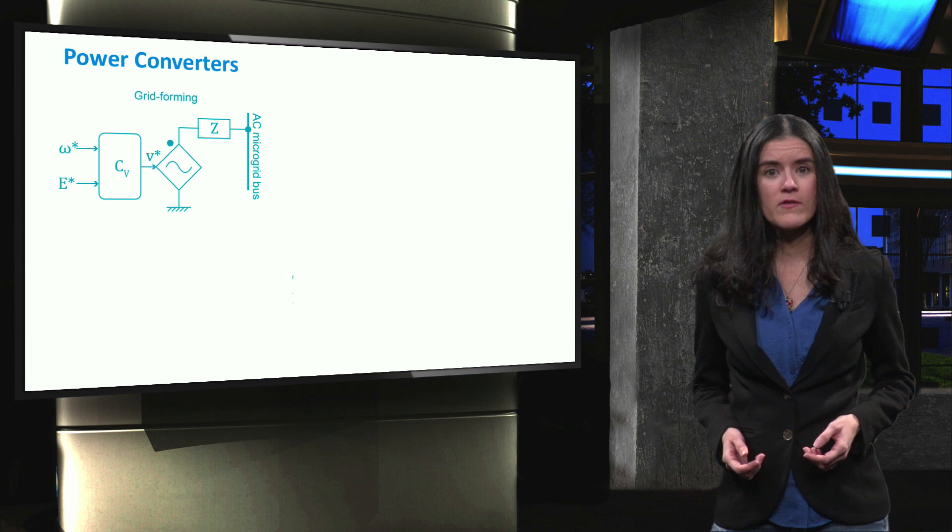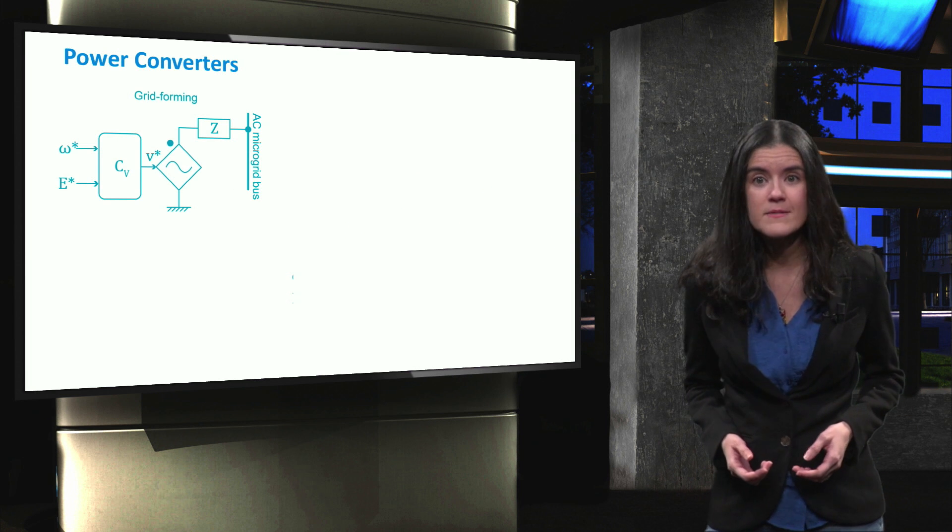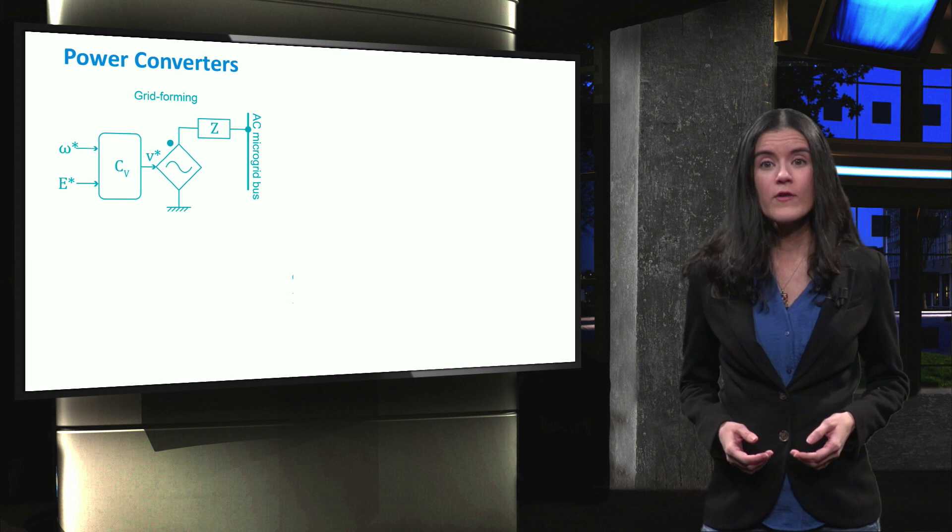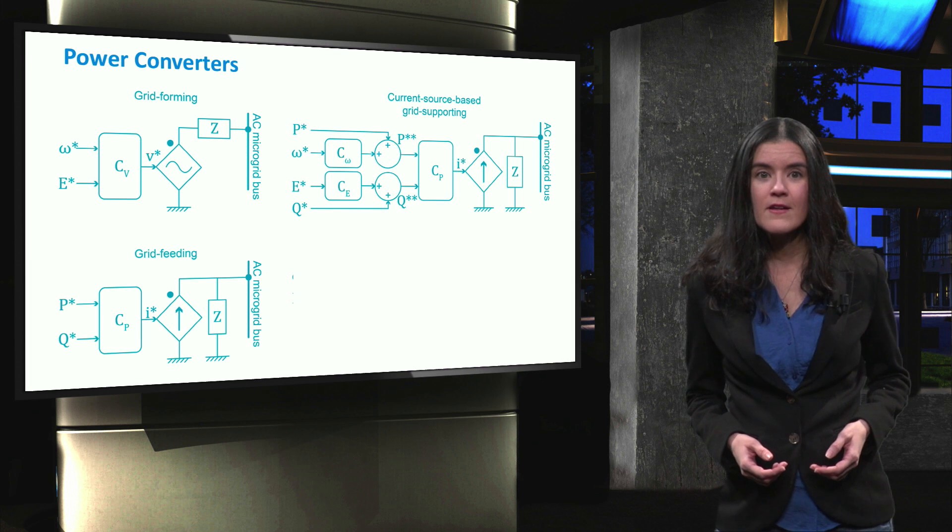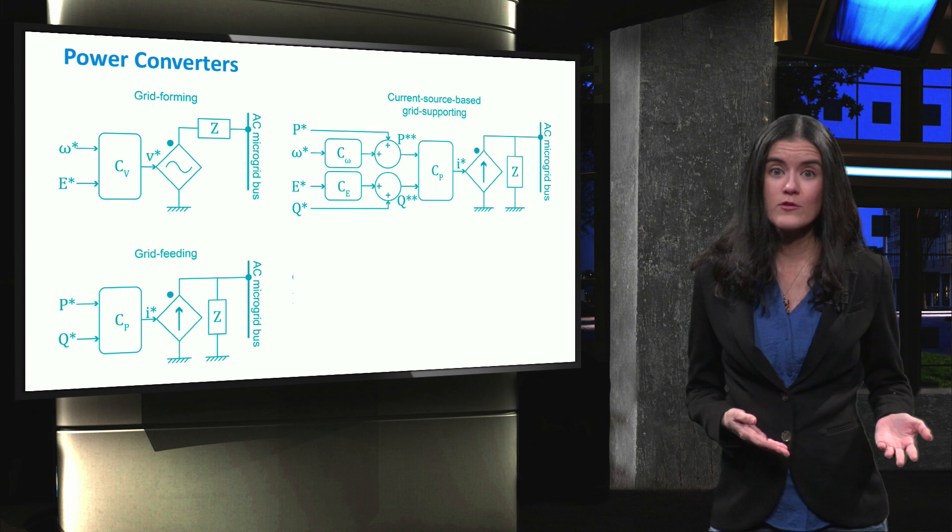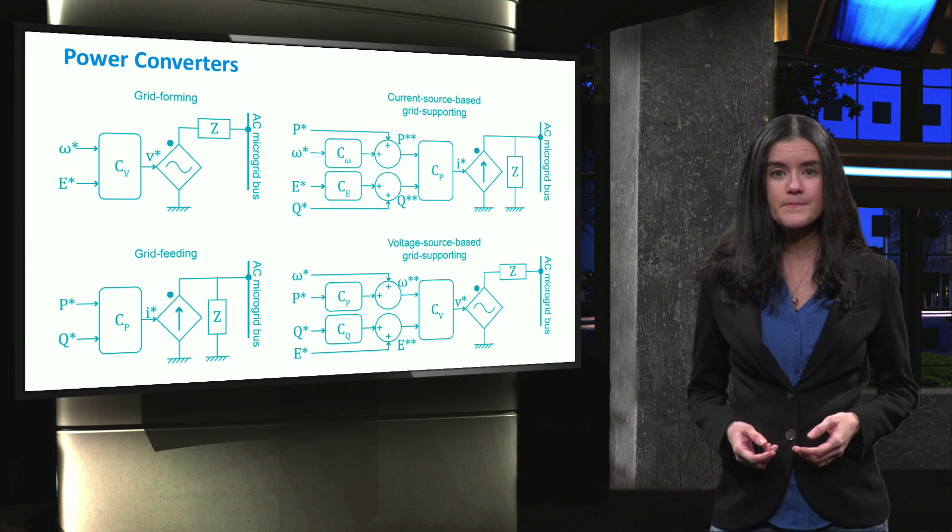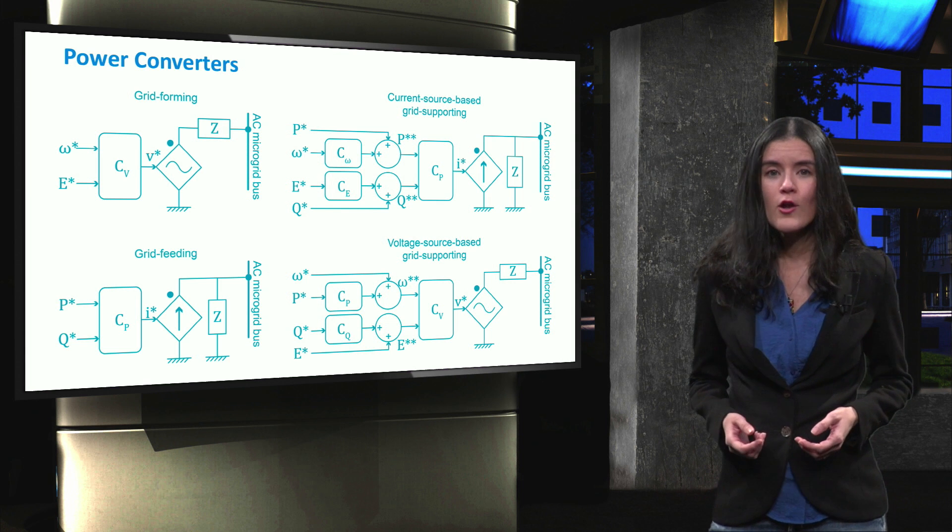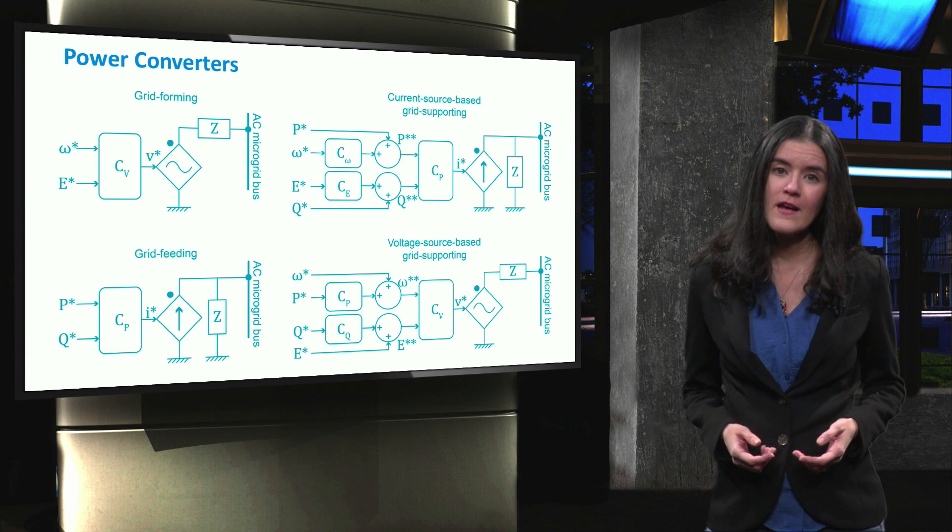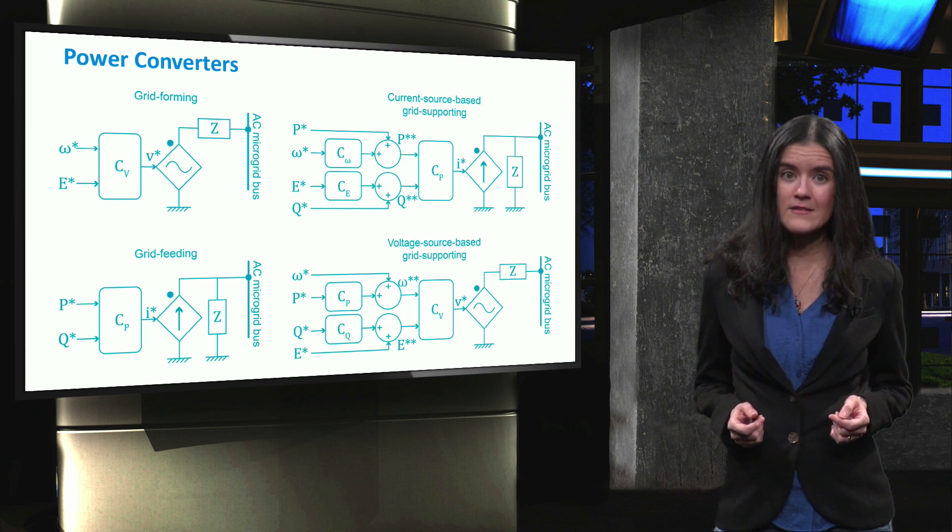In general, power converters can be divided into three different types: grid-forming, grid-feeding, and grid-supporting. This last group can be divided into current source-based and voltage source-based grid-supporting converters. Depending on the type, local control is implemented differently. Let's see how this is done for an AC microgrid.